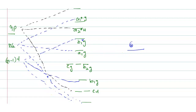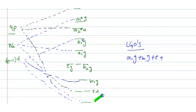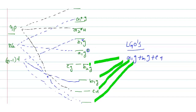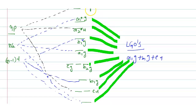The LGOs — eg, b1g, and eu — all combine into the molecular orbital diagram. These complete the molecular orbital treatment of square planar complexes. Thank you.